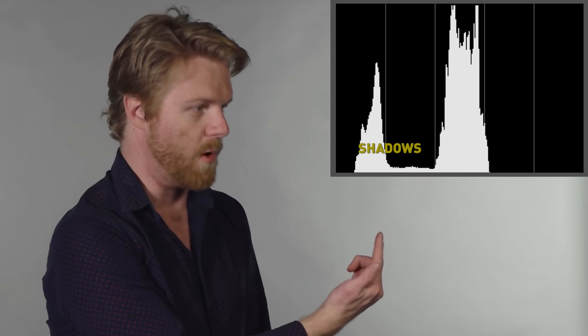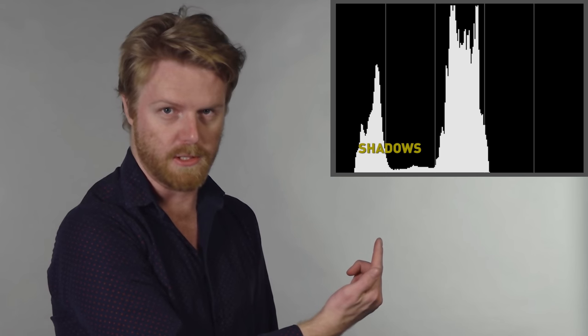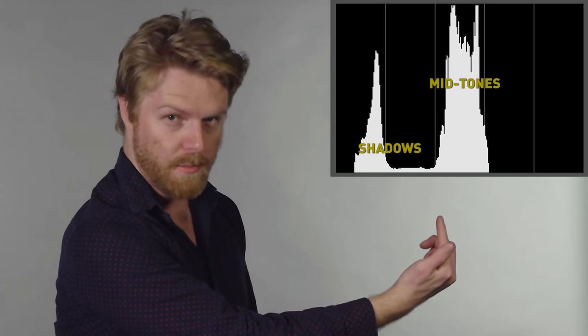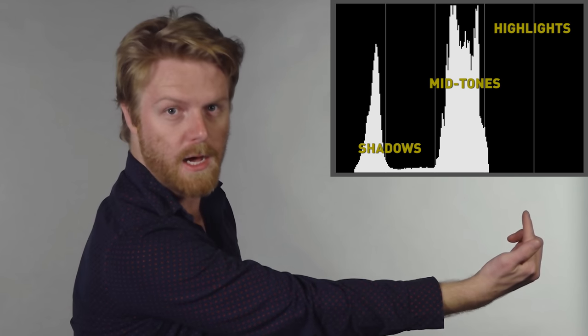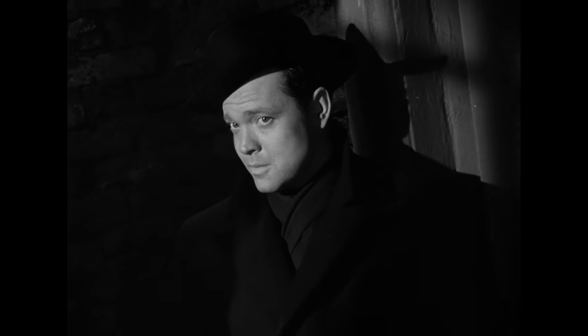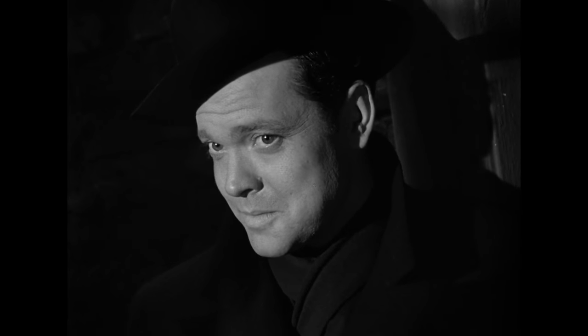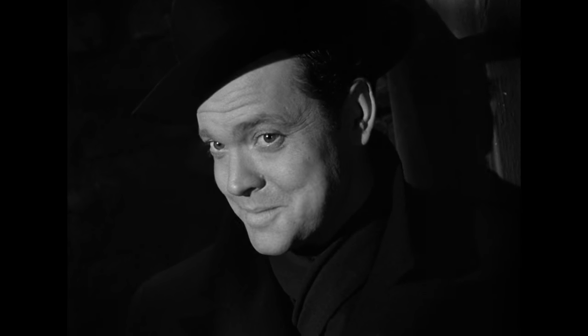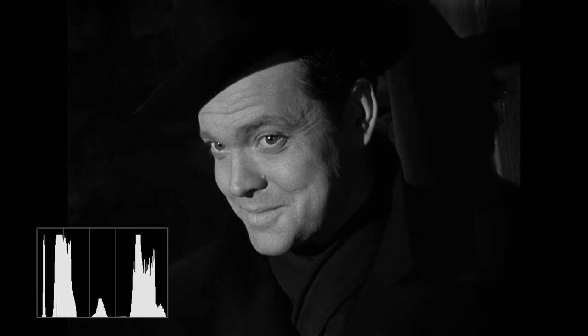The left third of the histogram represents the shadows in your image. The middle represents the midtones, and the right third represents the highlights. A high-contrast image, for example like this one from The Third Man, is going to have a high concentration in the shadows and a high concentration in the highlights, but not a lot in the midtones. But this image from McCabe and Mrs. Miller is much lower contrast, so the mountain is in the middle of the histogram, where the midtones are.